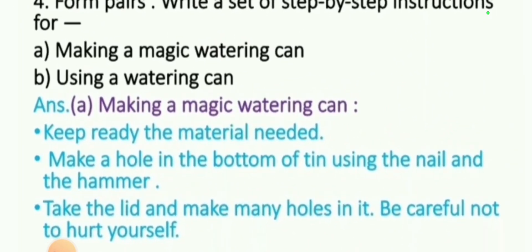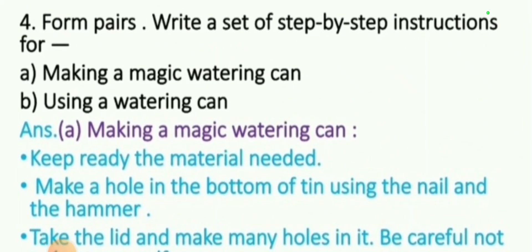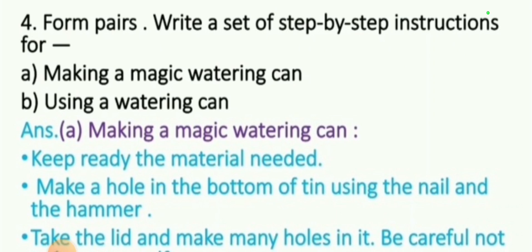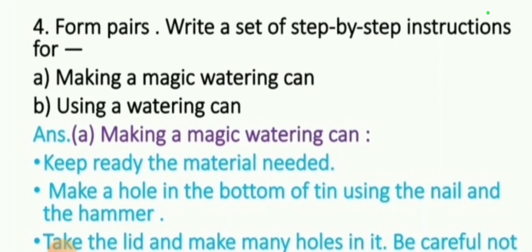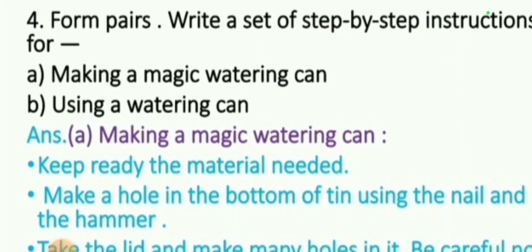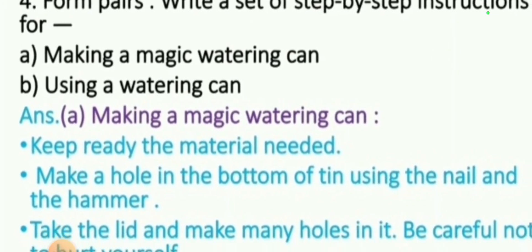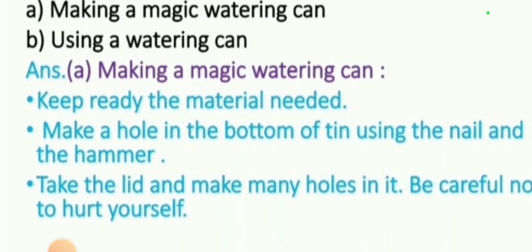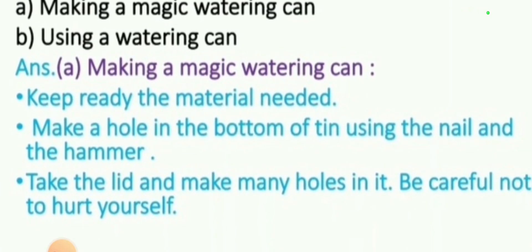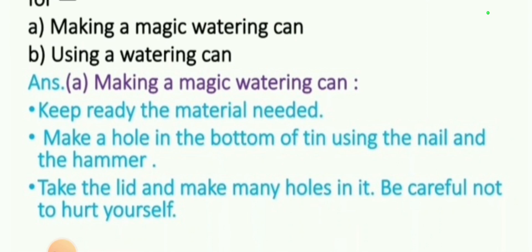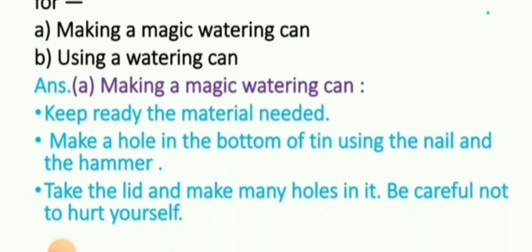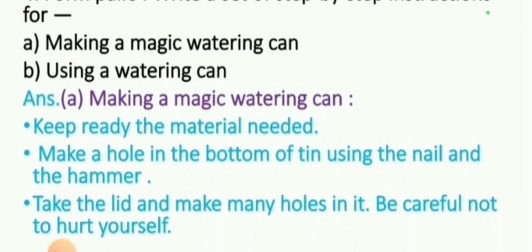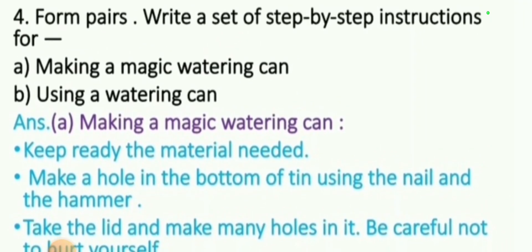Question 4: Write a set of step-by-step instructions for making a magic watering can. Step 1: Keep ready the material needed. Step 2: Make a hole in the bottom of the tin using a nail and a hammer. Step 3: Take the lid and make many holes in it. Be careful not to hurt yourself.